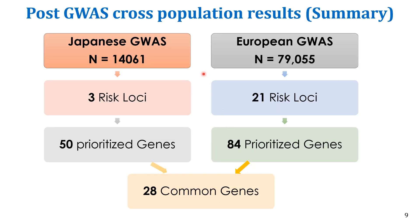This is the overall summarized result of the post-GWAS cross-population analysis. The Japanese GWAS had 14,000 samples and the European GWAS had 79,055. There were 3 risk loci identified in the Japanese population and 21 risk loci in the European GWAS, out of which 50 genes were prioritized in Japanese and 84 in European. When the results were compared, 28 common genes were found in both populations, suggesting these genes can be generalized as common in relation to lung function across different populations.